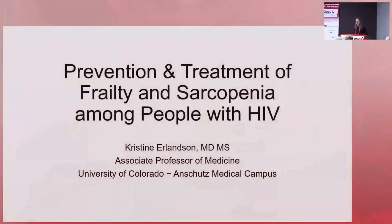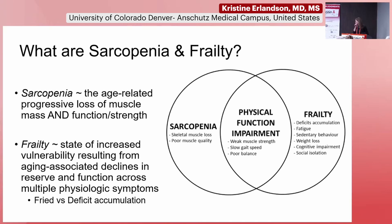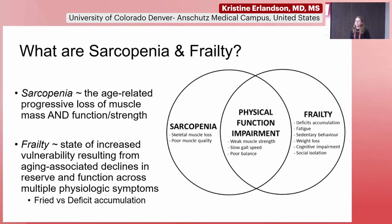Thank you, Scott. As Scott mentioned, I'm going to talk a little bit more about prevention and treatment of frailty and sarcopenia. Hopefully it will be a nice follow-up to the previous talks. We all heard quite a bit about sarcopenia. I won't talk more about sarcopenia specifically in terms of definition, but I did want to highlight the overlap with this concept of frailty, primarily through those physical function components of sarcopenia — weak muscle strength and physical function impairments — which together overlap with frailty, reflecting increased vulnerability from declines in multiple different aging systems.